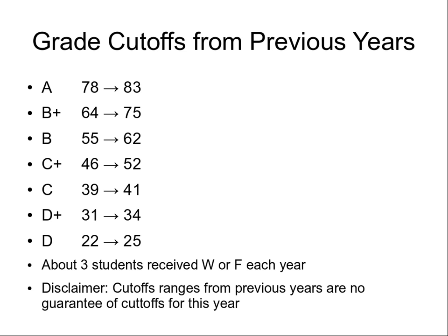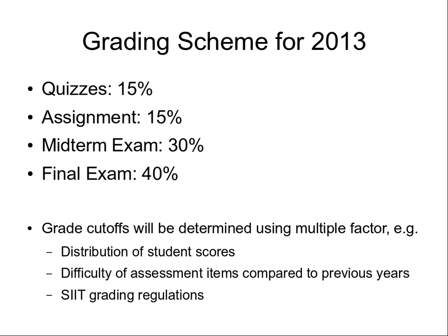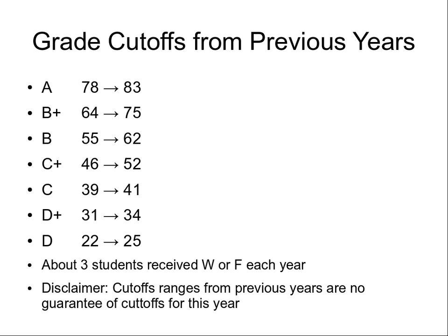Usually in previous years about three students received an F or withdrew at the right time. I don't want anyone here to get an F. There's no formula I can give you for predicting your grade exactly, but you can predict your quiz score, you know your midterm score, and before the final exam you'll know your assignment score. You can then predict what you need in the final exam to reach a total score and use the grade ranges to get an indication of what grade you may be looking at.